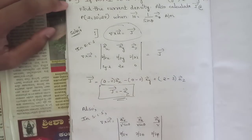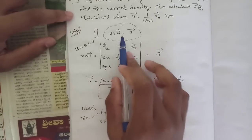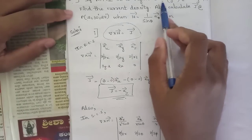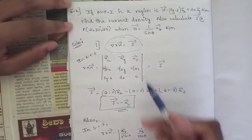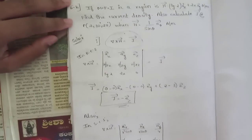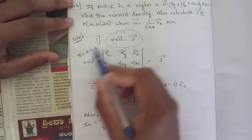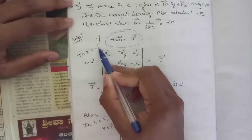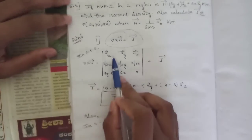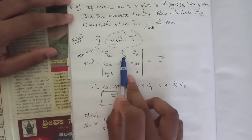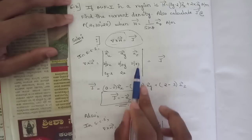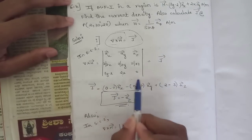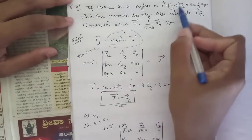For the first case, H has ax and ay components, so it is in the rectangular coordinate system. We expand ∇×H as a determinant with first row: ax, ay, az; second row: ∂/∂x, ∂/∂y, ∂/∂z; third row: Hx = (3y−2), Hy = 2x, Hz = 0.